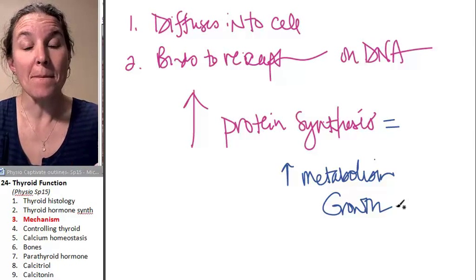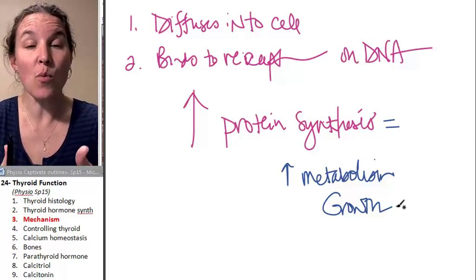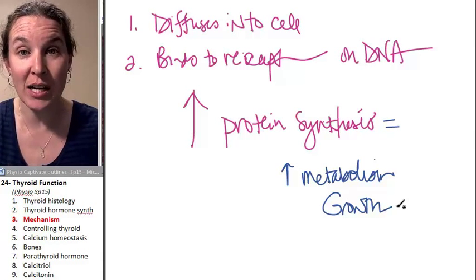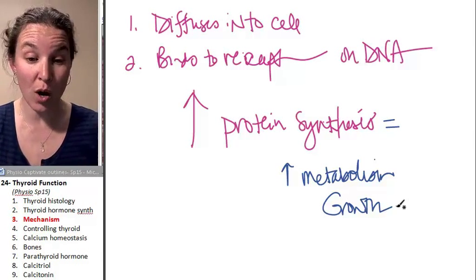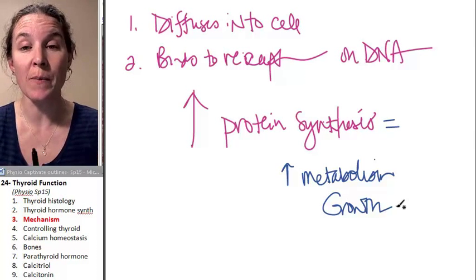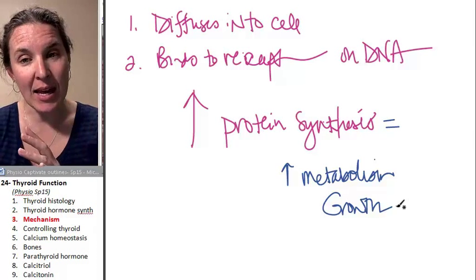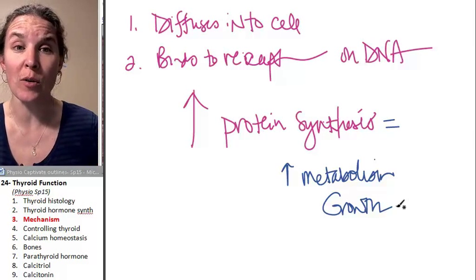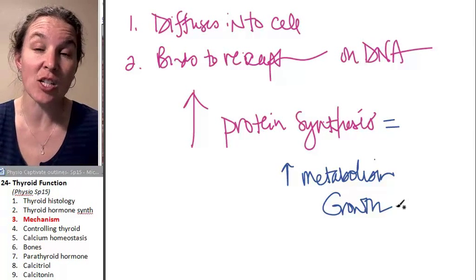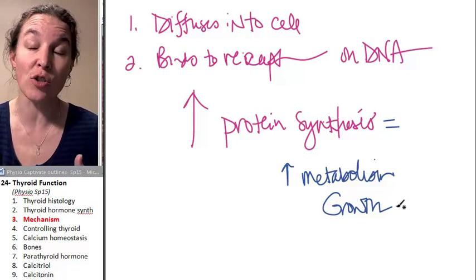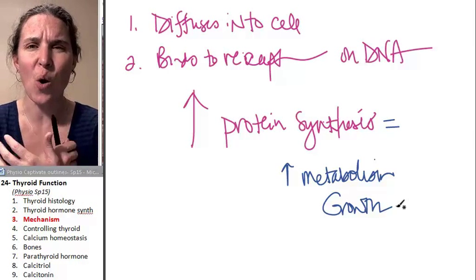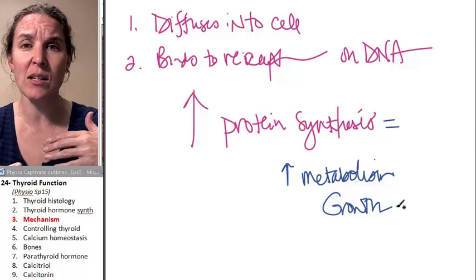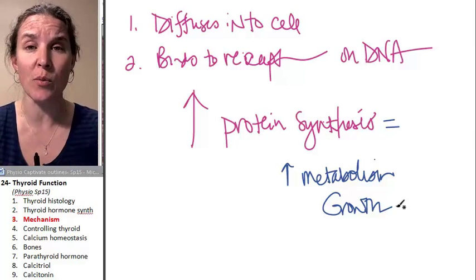So metabolism, the more thyroid hormone you have, the higher your metabolic rate. The more you grow, the more active you are. And so you can imagine that low thyroid hormone means you start to feel kind of sluggish. Your metabolic rate goes down. You might gain weight. You might be cold all the time because your body isn't going through those metabolic reactions as quickly.